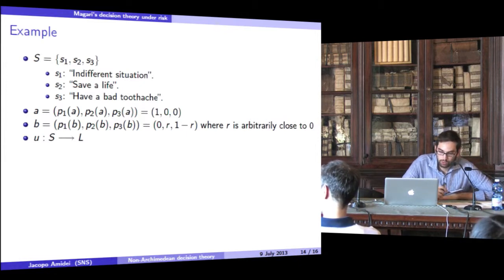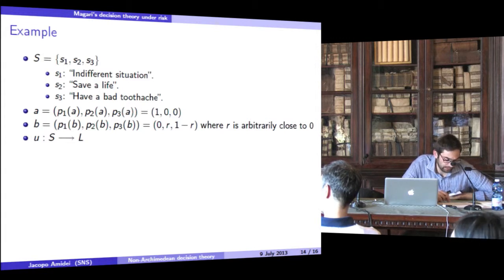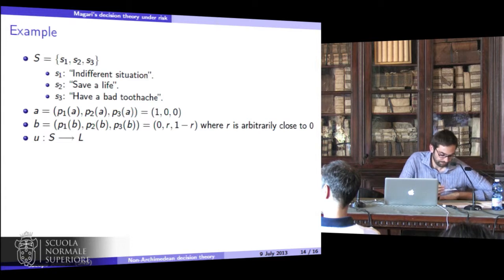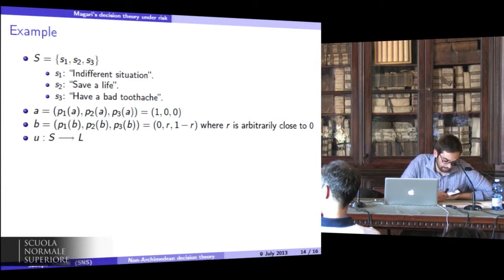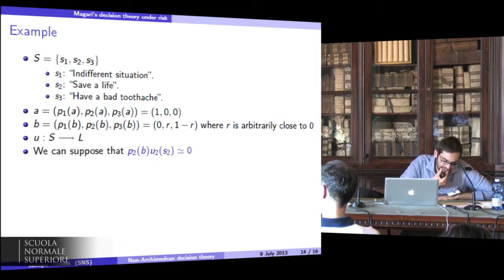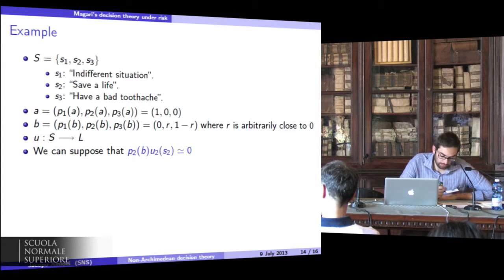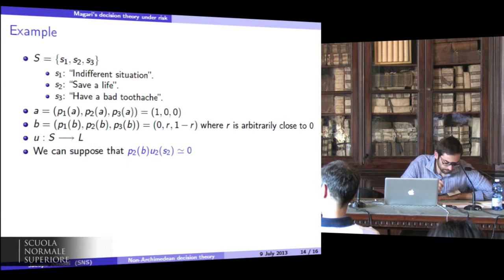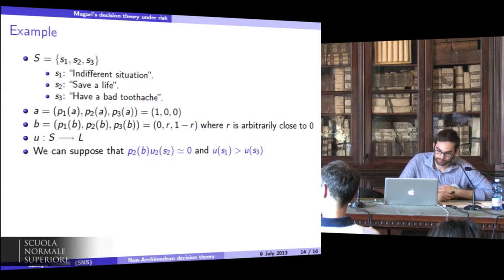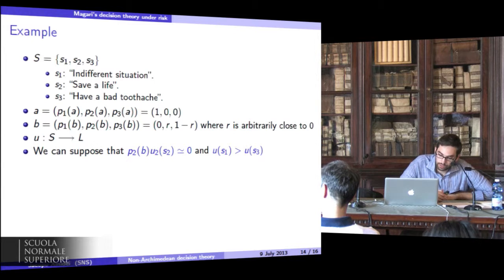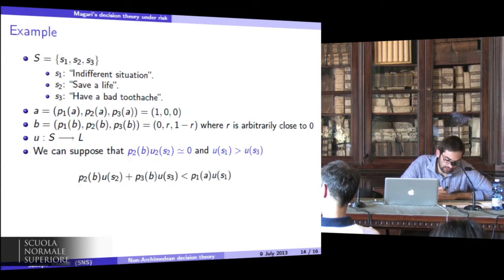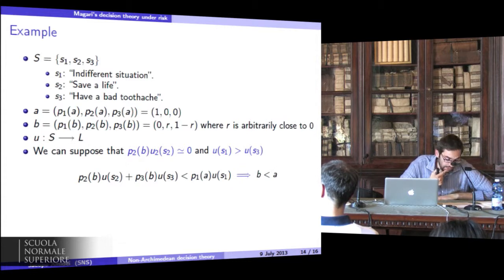U is a utility function from S to L, where L is an ordered field, for example R, the field of real numbers. Now, we can suppose that the value of p_2(B) times U(s_2) is very close to 0 because p_2(B) is arbitrarily close to 0. And we can suppose that U(s_1) is greater than U(s_3). And so the expected utility of B is less than expected utility of A, and thanks to the representation theorem, act B is not preferred to act A.